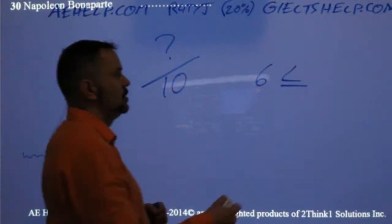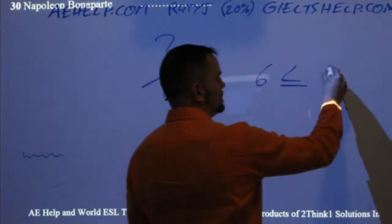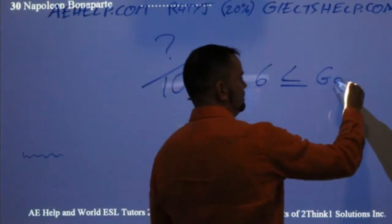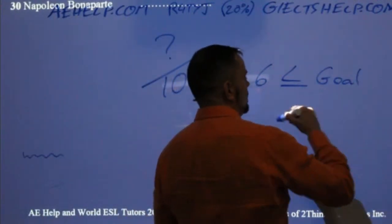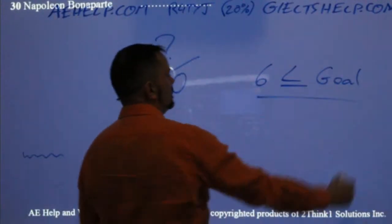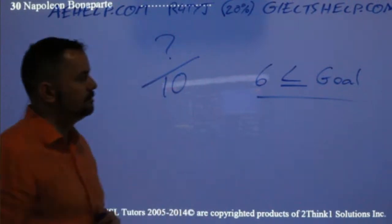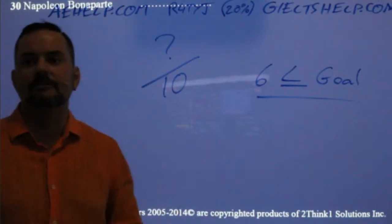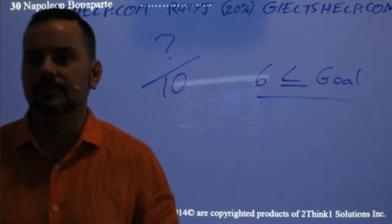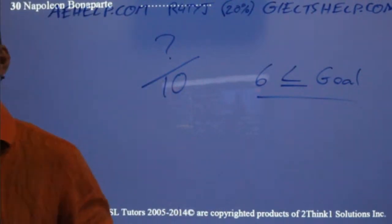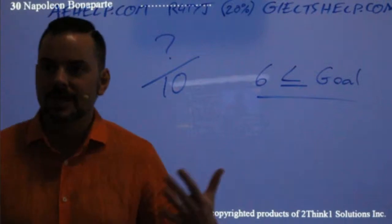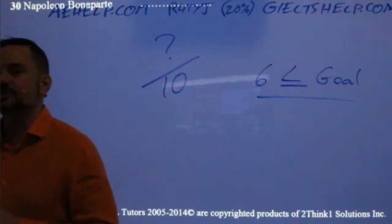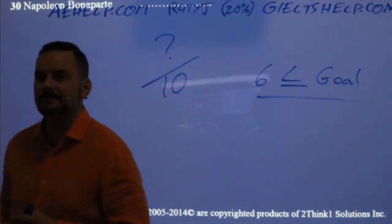Your goal is over six in Part Three and Part Four. If you've gotten over six, you're on the right track. Max production: six — you're on the right track.